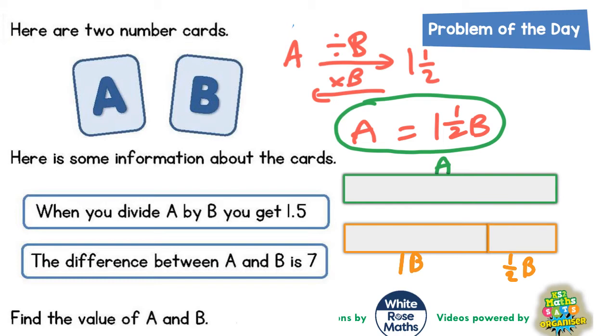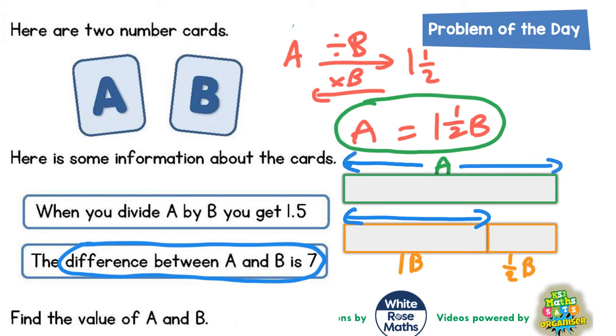And now comes the clever bit. The second clue tells us that the difference between A and B is 7. So if this length here represents the size of B and this length here represents the size of A, the difference between them must be the extra bit on the end of A here, which is also the same as this extra half of B here. And the difference between them is 7, so that bit must be worth 7.